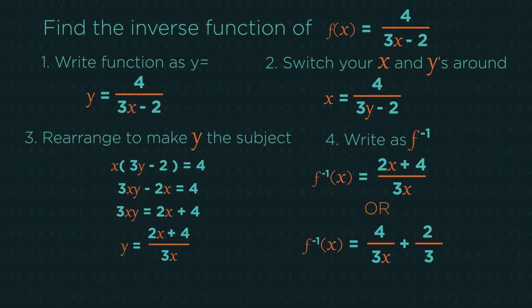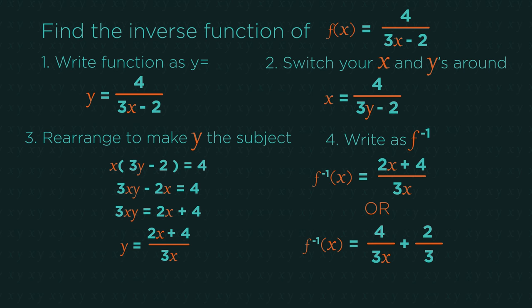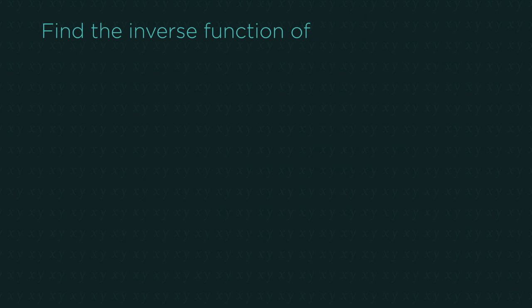How did you get on? You may have also got f to the minus 1 of x equals 4 divided by 3x plus 2 thirds. This is just because you did your rearranging a little bit differently.